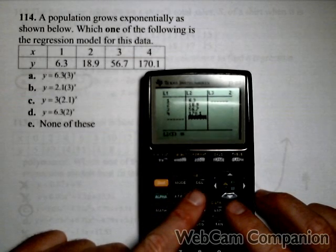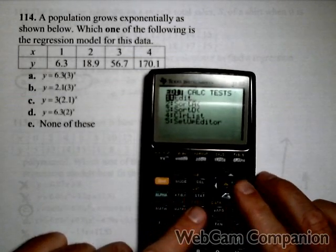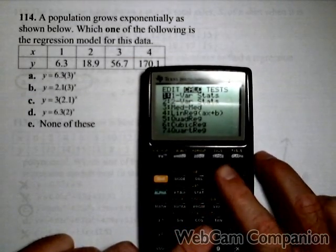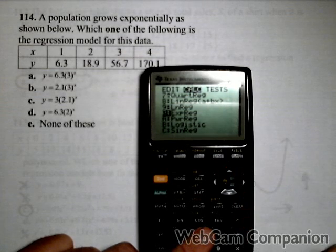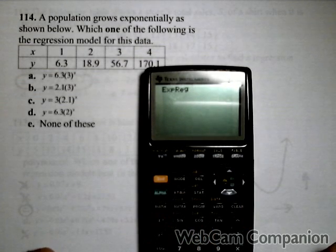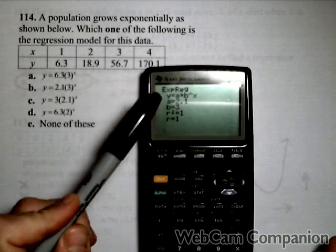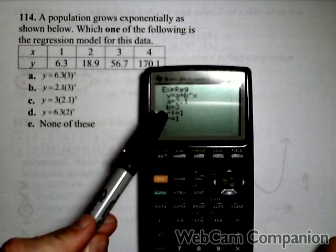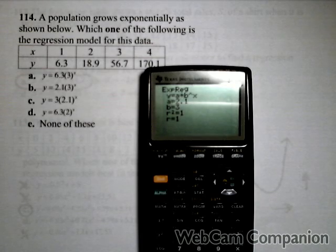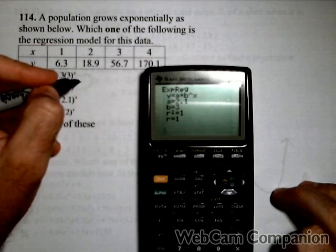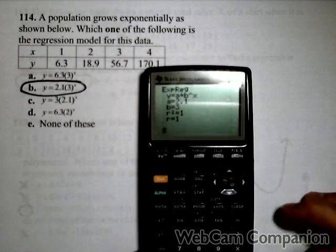Lists are the same length. I've got everything entered correctly. Stat, calc. Exponential regression is towards the bottom. Enter. And now we're ready to execute. And we see that we get an initial value of 2.1 and a base of 3. The exponential model that has that is answer B. And that's how we can do that using regression.